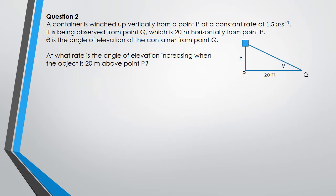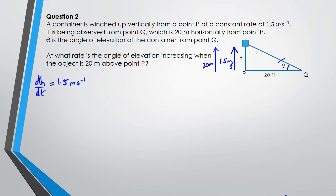For question two, you've got a container that's winched up vertically from a point P. It's being pulled up at 1.5 meters per second, so dh/dt equals 1.5 meters per second. The container is being observed from point Q, which is 20 meters away from point P. They're asking at what rate the angle of elevation is increasing when the object is 20 meters above point P.